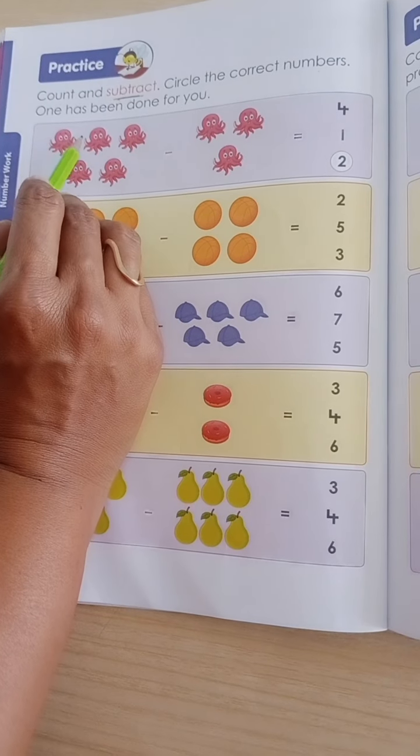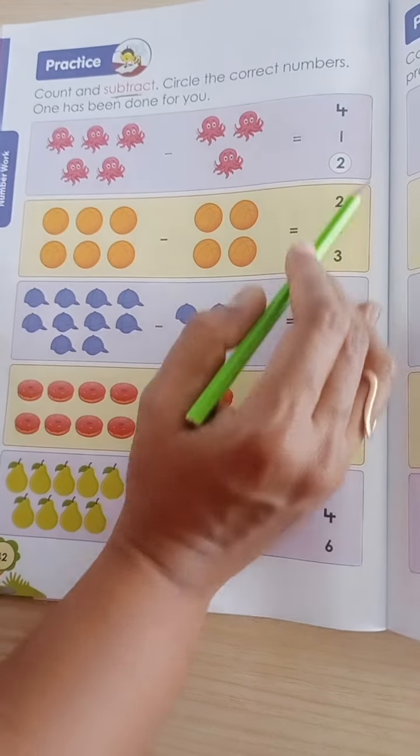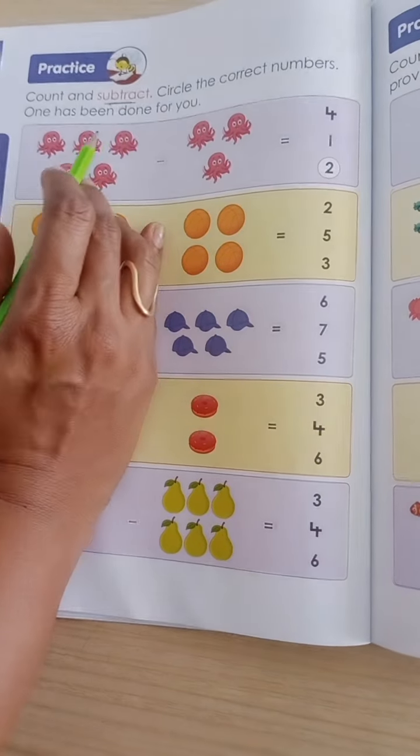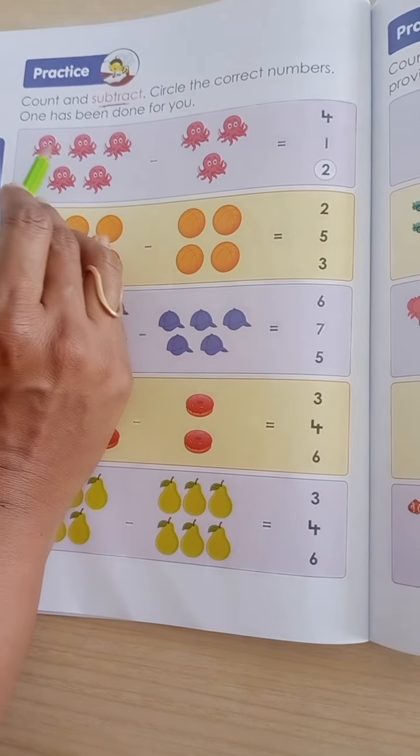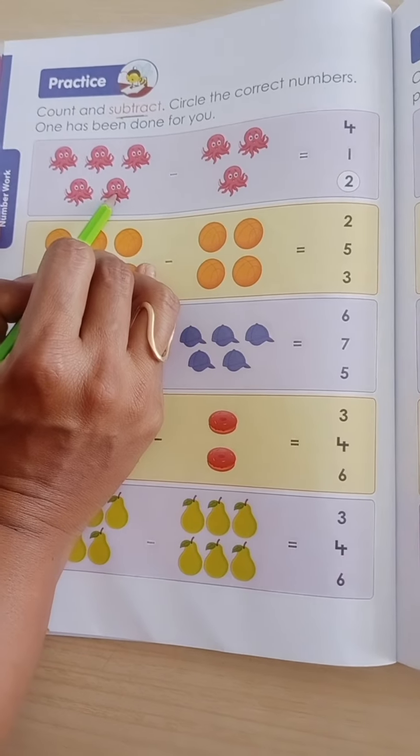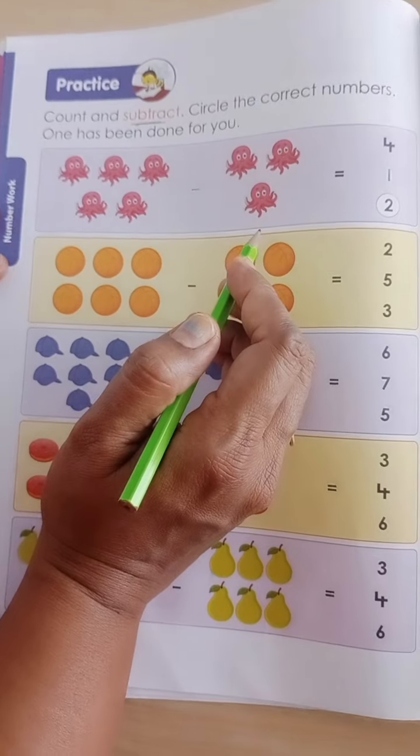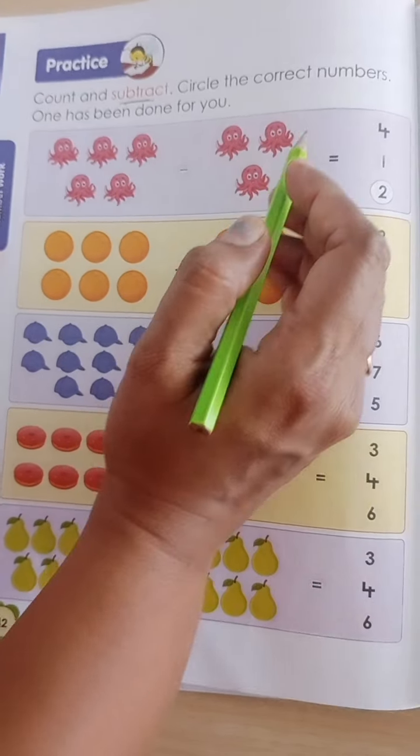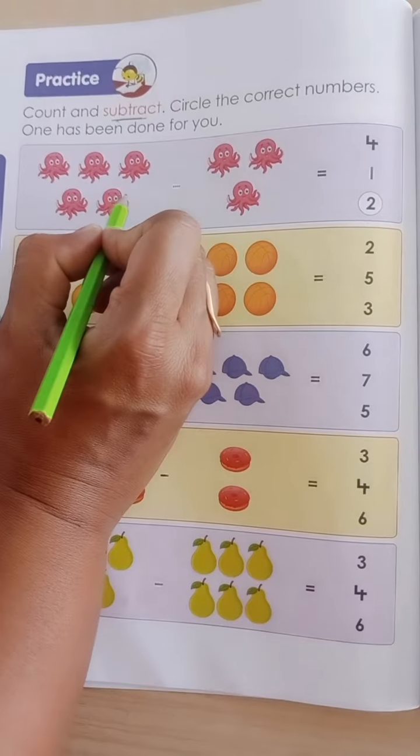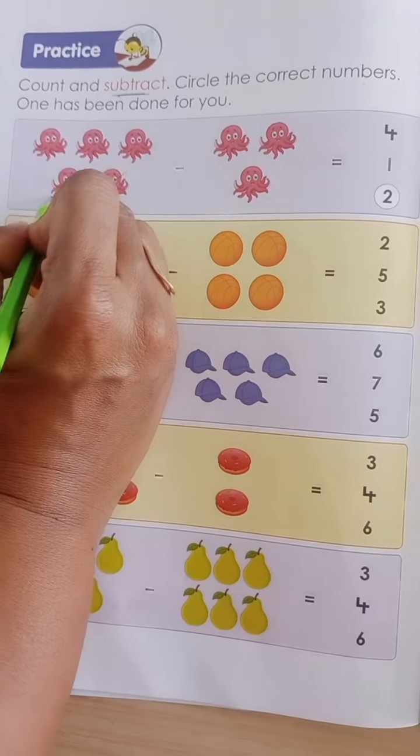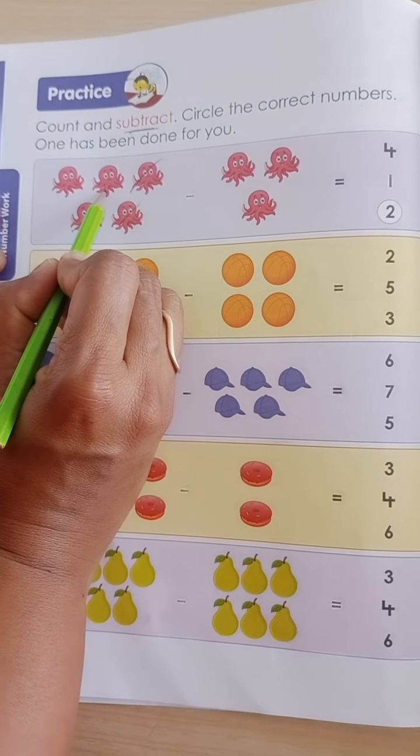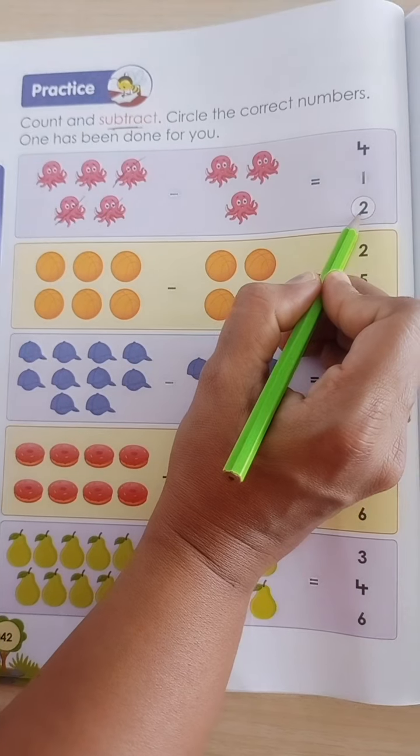So now see, this is the first example. Here we have shown how to do it. How many octopuses are here? Let's count: 1, 2, 3, 4, 5. Now we are going to cut 3 octopuses. 1, 2, 3, minus 3. Then we cut 3 octopuses: 1, 2, and 3. How many octopuses are remaining now? 1, 2. So the answer is 2.